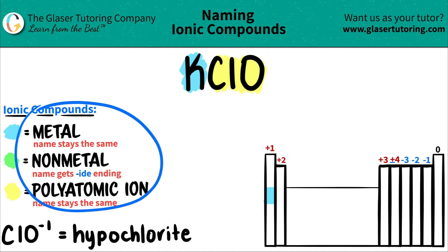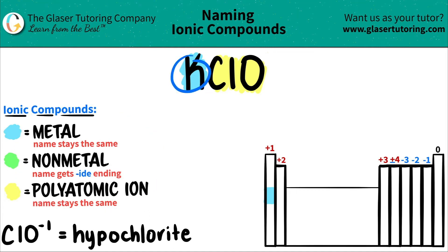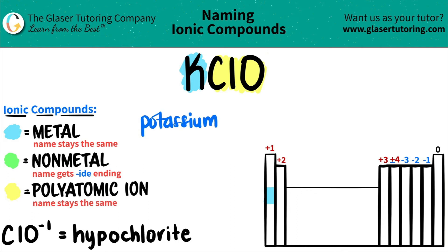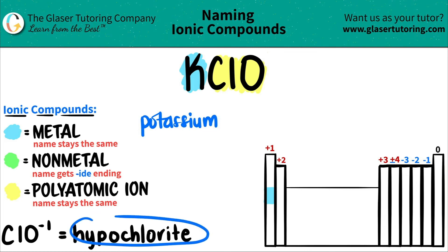Now we're going to start naming. The metal name comes first because it's literally stated first, and that name always stays exactly the same. So K — I'm just going to write potassium. And then we have the polyatomic, and that name always stays exactly the same, so you just have to memorize them. Hypochlorite — it's going to stay hypochlorite.